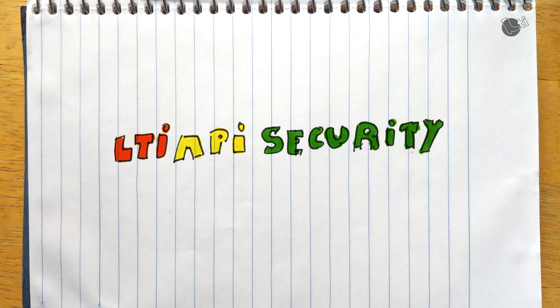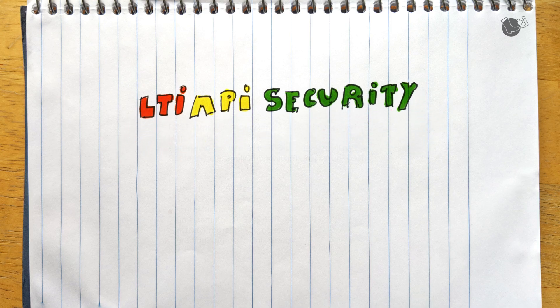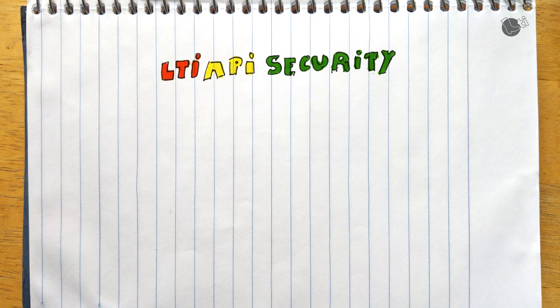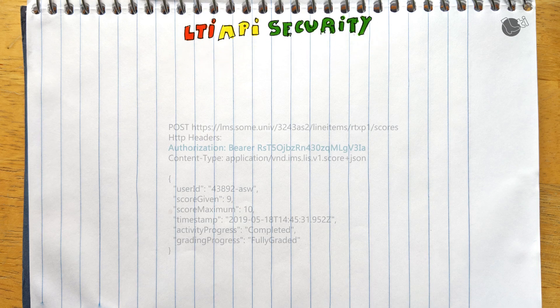LTI is not just about launching from the learning platform to the tool — it's also about the learning platform exposing service APIs to the tool. An important example is the ability to post scores. Those services need to be secured, and that's what we're going to cover in this video.